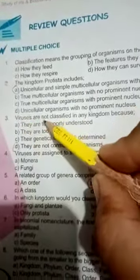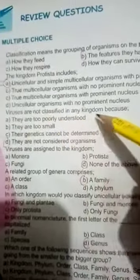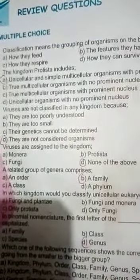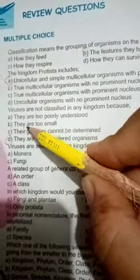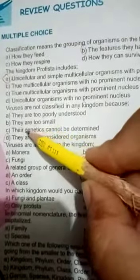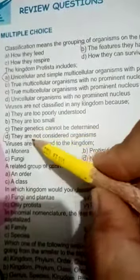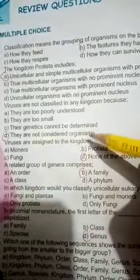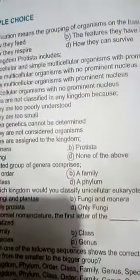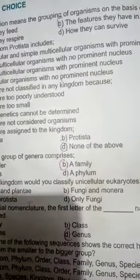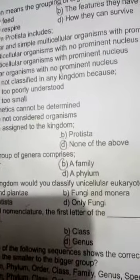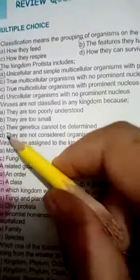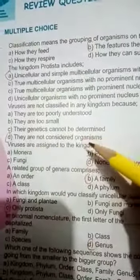Third: Viruses are not classified in any kingdom because they are too small, their genetics cannot be fully determined, and they are not considered true organisms. They have acellular bodies — they have not been placed in cells — and therefore are not considered organisms.